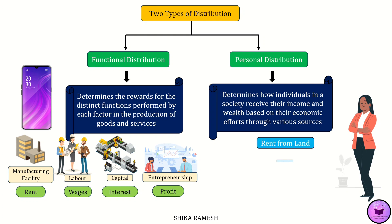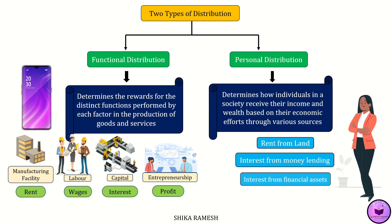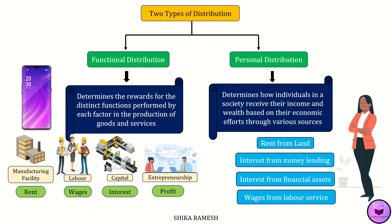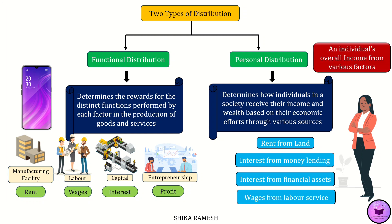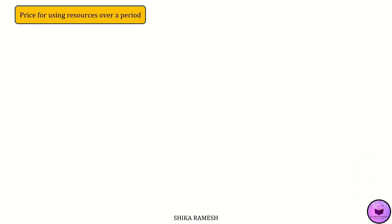Imagine an individual earning not only from land rent, but also potentially from lending money (interest income), from investing in various financial assets (also interest income), and by providing labor services (wages). Personal distribution considers earnings from various factors of production that make up an individual's overall income.